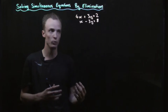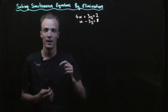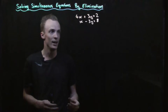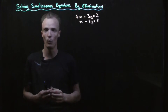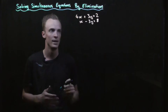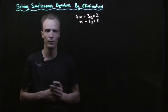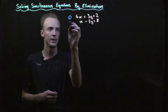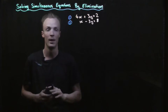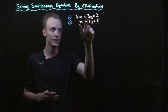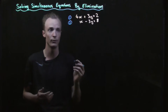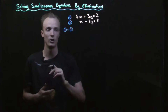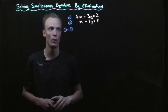Now if we've got a match we look at the sign in front. If the signs are the same we need to subtract them; if the signs are different we need to add them together. I'm going to call the top equation equation 1 and the second equation equation 2. Because the signs of our coefficients are different we need to add the equations together — so equation 1 add equation 2.